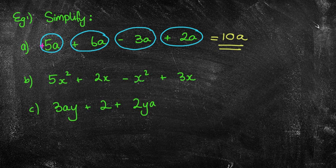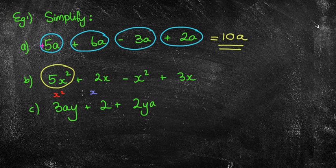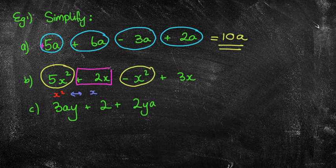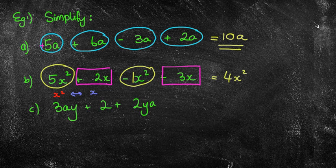The next one is more challenging — we have x's. With 5x squared, in order to add or subtract, the letter must be identical. We have x squared terms and plain x terms, which are different. So 5x squared minus 1x squared: 5 take away 1 equals 4x squared. Then plus 2x plus 3x: 2 plus 3 makes 5x. The final answer is 4x squared plus 5x — we can't add them together because one's x squared and one's x.